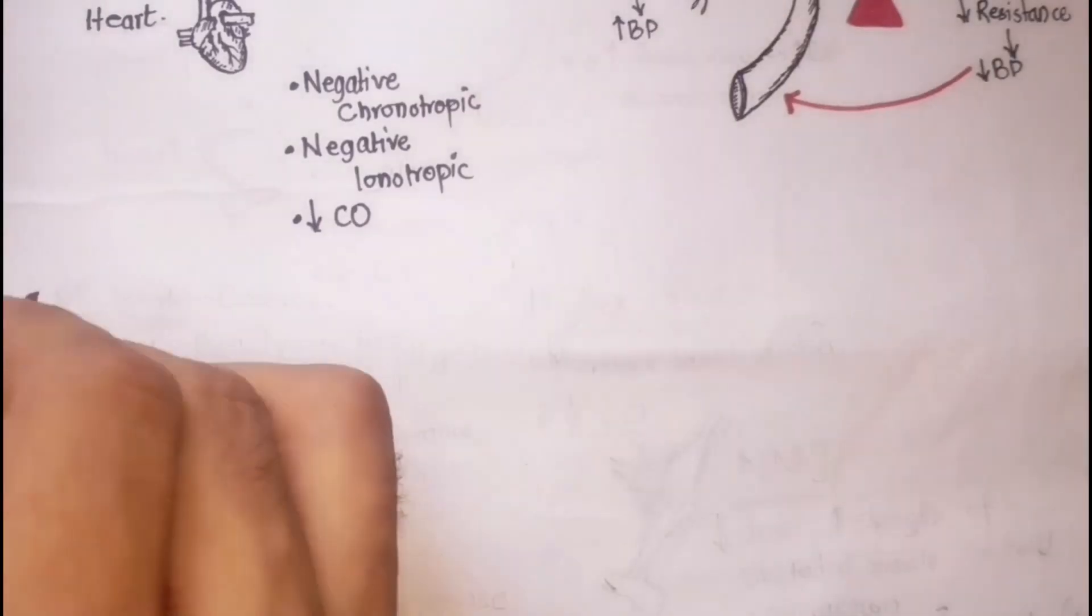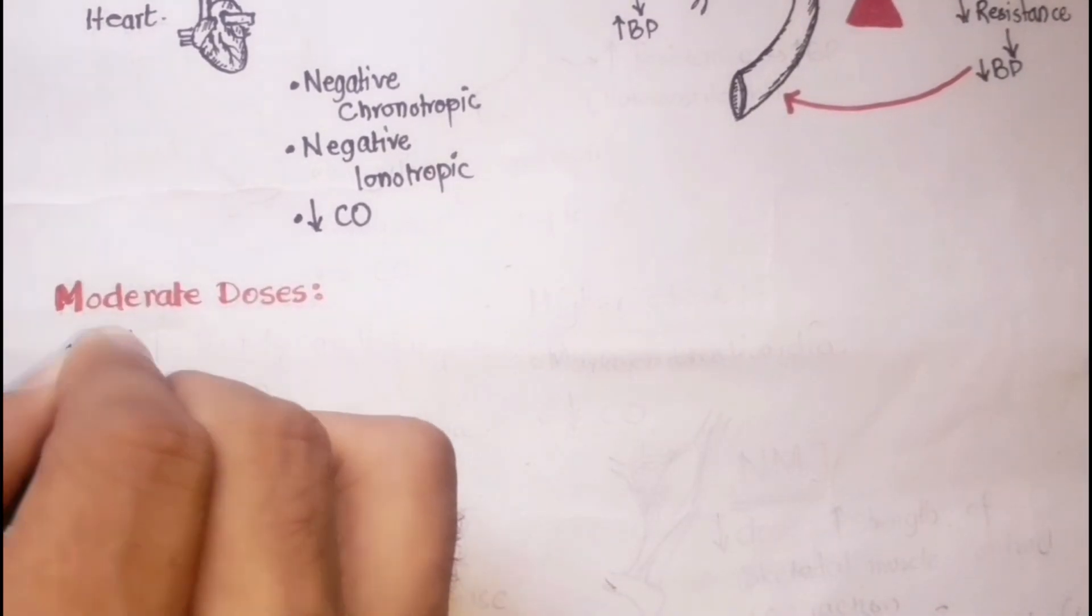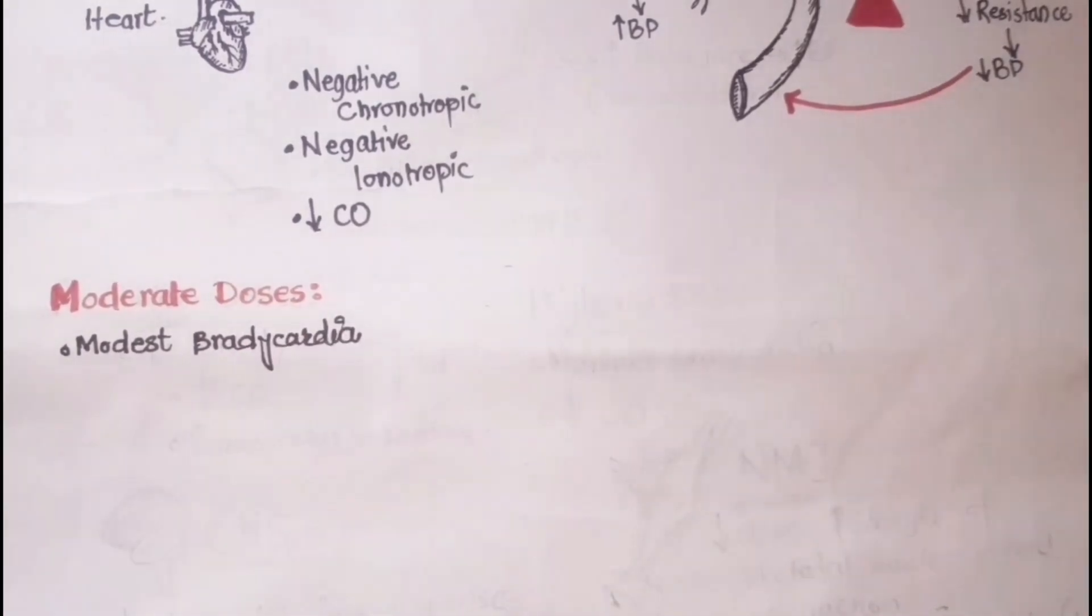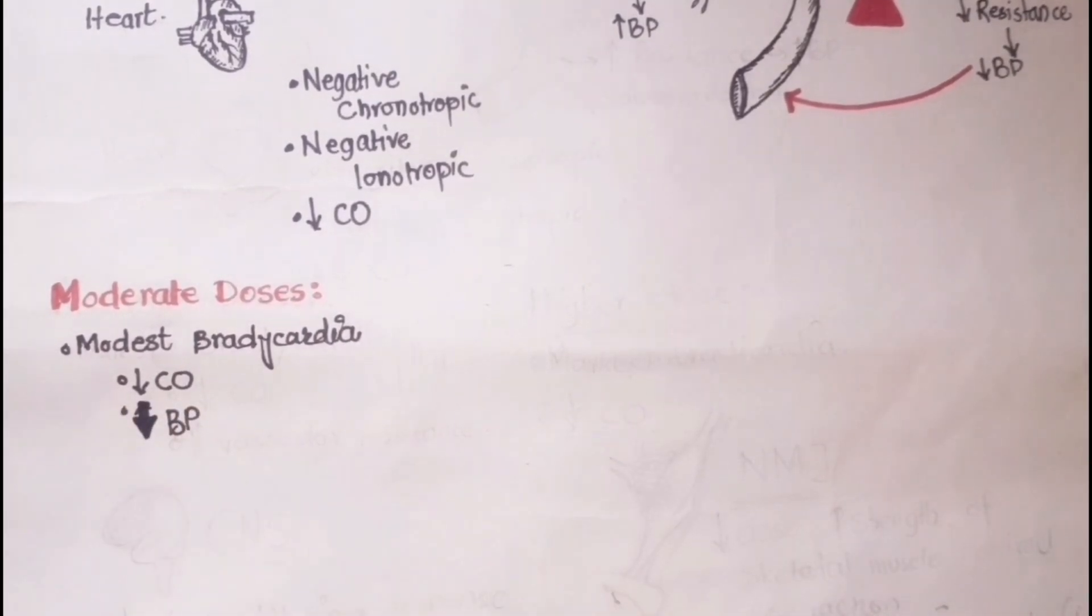So, the net effects on the cardiovascular system with moderate doses would be modest bradycardia, decreased cardiac output, and no change or modest pulse and blood pressure.